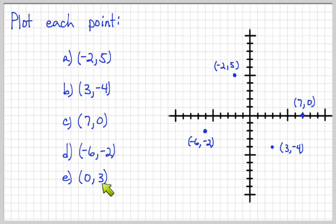And for the last one, (0, 3), we'll go left or right, none, and up three. So that will say one, two, three, our last point will be here, (0, 3).